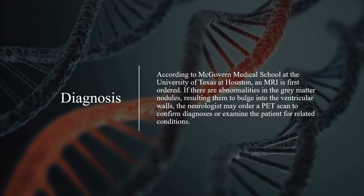According to McGovern Medical School at the University of Texas at Houston, an MRI is first ordered. If there are abnormalities in the gray matter nodules resulting them to bulge into the ventricular walls, the neurologist may order a PET scan to confirm diagnosis or examine the patient for related conditions.